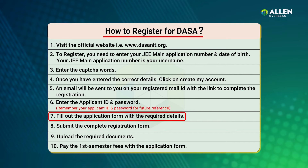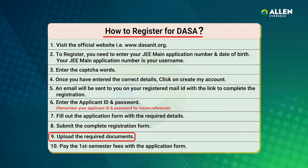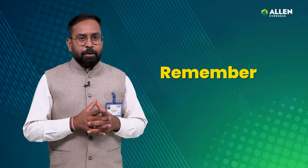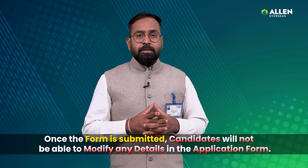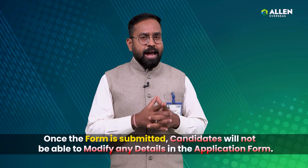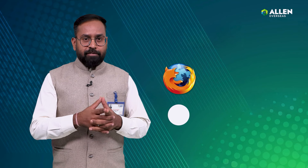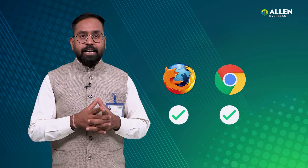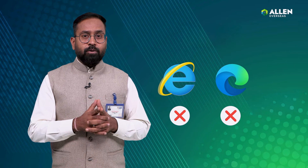Fill out the application form with the required details and submit the complete registration form. Upload the required documents and pay the first semester fees along with the application form. If a candidate is not able to fill out the application form in one go, they can save and continue it in subsequent sessions, but must complete the form before the due date. Once the form is submitted, candidates will not be able to modify any details. You need not send a hard copy of the application form to the DASA office. Use Mozilla Firefox or Google Chrome browser; Microsoft Internet Explorer is not recommended.